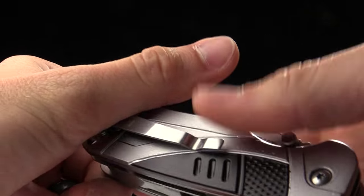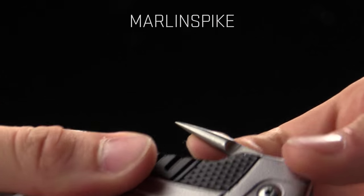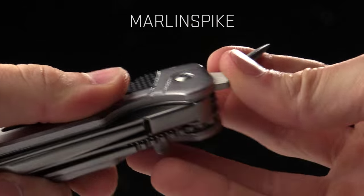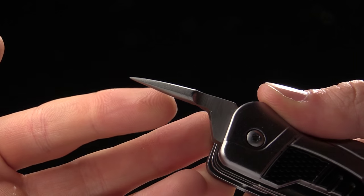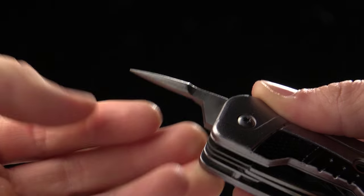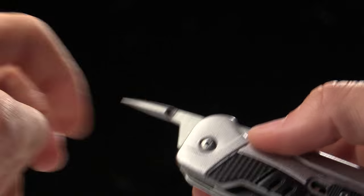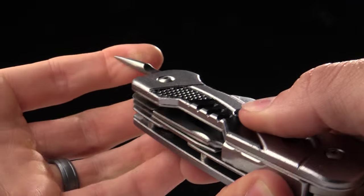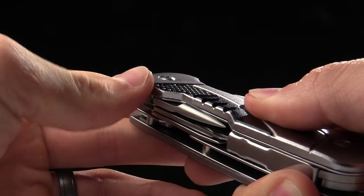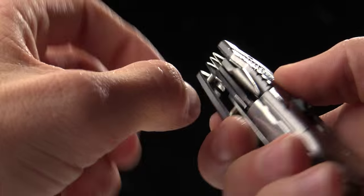Now on the other side of this tool we've got a marlin spike for undoing unruly knots, webbing, that sort of thing. That's going to work extremely well for that sort of work. Now all of these are also locking tools. So to unlock them you push the other direction on that button. It's always you push up to unlock and that will come undone.